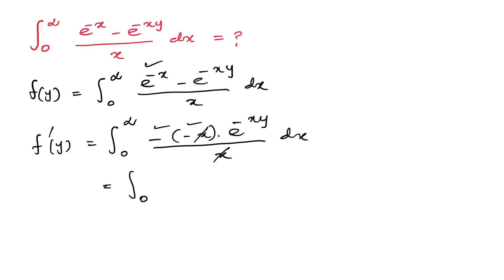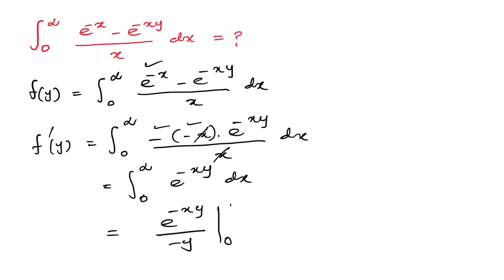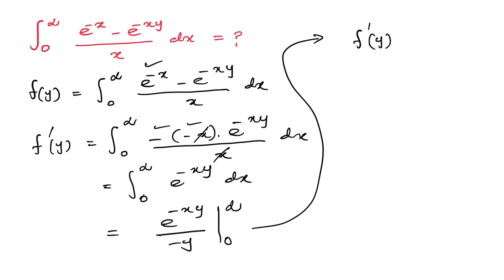The x cancels, and minus minus becomes plus, so we have the integral from 0 to infinity of e^(-xy) dx. Integrating this gives e^(-xy) over (minus y), evaluated from 0 to infinity. Applying the bounds: e^(-infinity) is 0, and minus minus becomes plus, so f'(y) equals 1 over y.